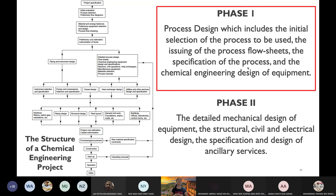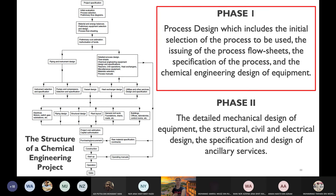In Phase 2 (Design Project 2), you do detailed mechanical design of equipment using software — determining size, specifications, structural, civil, and electrical design of equipment, plus ancillary services. Design Project 1 covers up to mass balance and energy balance only.